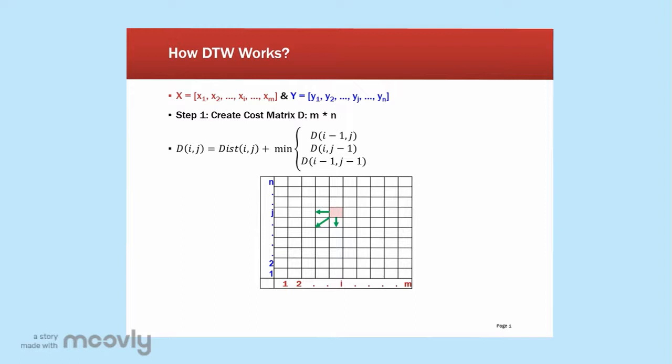The first step is to create a cost matrix and the second step is to construct a path or an alignment based on the matrix.